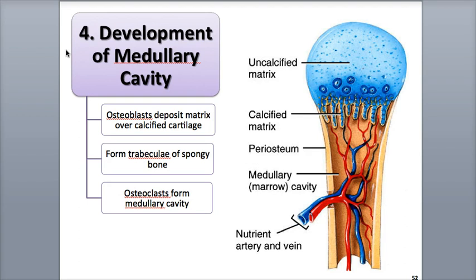In the fourth step, development of the medullary or marrow cavity, osteoclasts start to carve away and break down some of the spongy bone trabeculae as the primary ossification center grows outward. The osteoclasts ultimately carve out the medullary cavity within the diaphysis, with the remaining diaphysis wall ultimately transformed into compact bone.